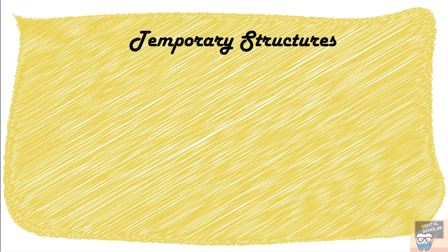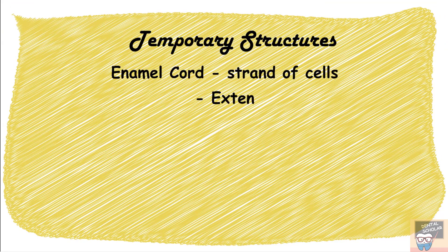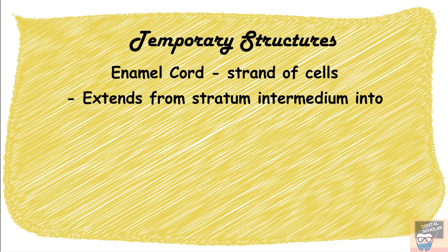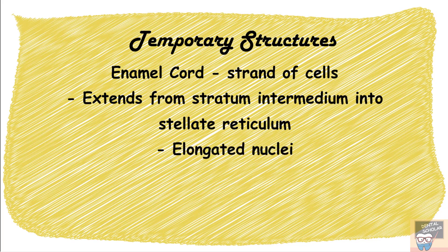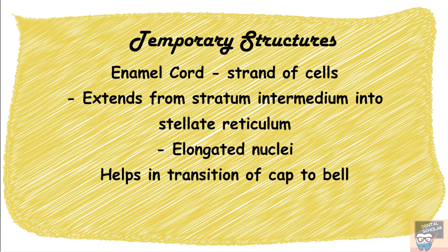The next temporary structure is the enamel cord, a strand of epithelial cells that extends from the stratum intermedium into the stellate reticulum towards the outer enamel epithelium. These cells have elongated nuclei, which helps differentiate them from stellate reticulum cells. It is proposed that enamel cord cells help in the transition from cap to bell stage.